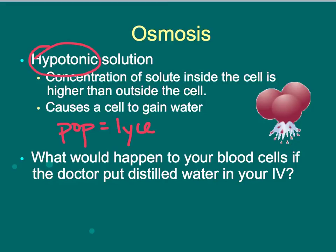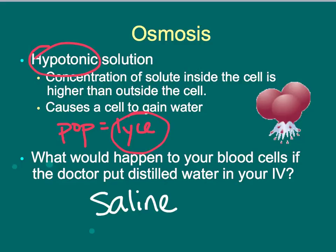If a doctor put distilled water into your bloodstream, your blood cells would lyse. That's why they use a saline solution — it has a balanced concentration of salts that matches the concentration inside most people's cells. So when the saline solution goes into your system, it can increase your blood pressure without causing individual cells to lyse because their environment hasn't changed.